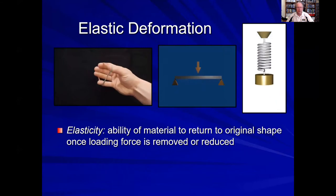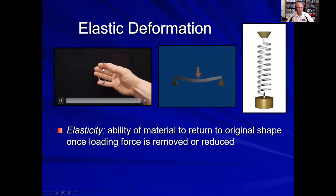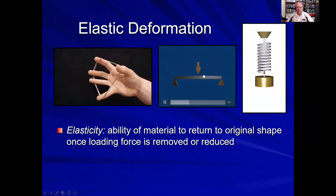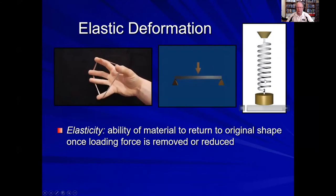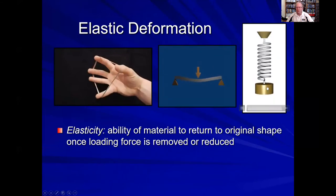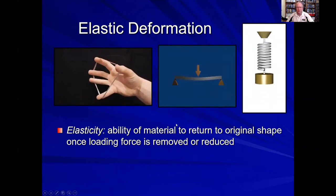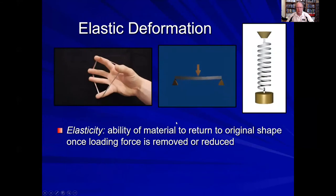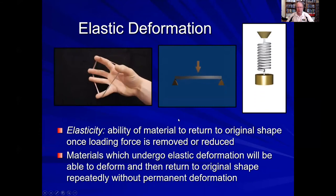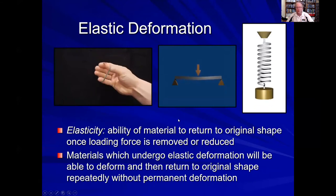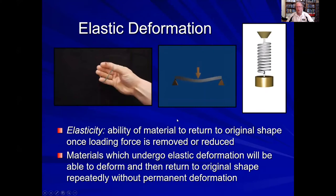What exactly does it mean to have an elastic deformation? An elastic deformation could be a rubber band that we stretch and then let go, a bar or beam that bends and returns to its original shape, or a spring that is loaded and unloaded and returns to its original shape — as long as the loading force is low enough. So elastic deformation means low-load external forces that allow the material to absorb energy, return energy, and return to its original shape without permanent deformation.